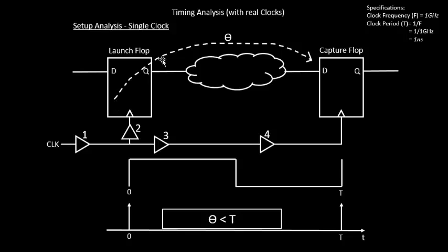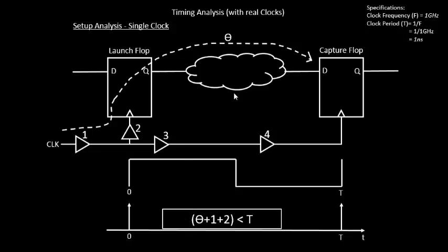If the initial equation looked like this, now we also need to account for clock delay. The clock edge at time 0, which was supposed to reach the launch flop at 0 nanoseconds, will now reach at 0 plus buffer delays 1 and 2. The conventional delay requirement was that theta should be less than T. Now let's modify this: the clock edge through buffer delays 1 and 2 to the launch flop is the launch flop clock network delay.